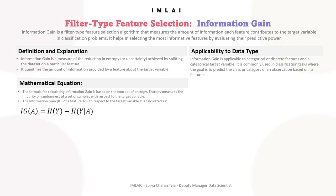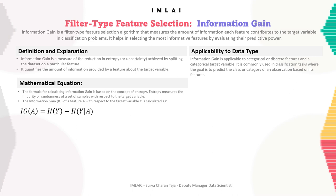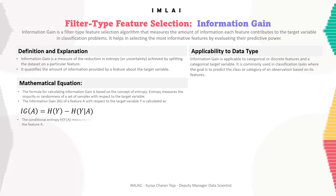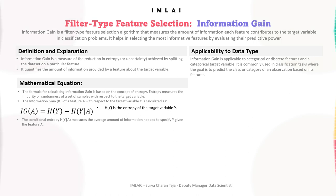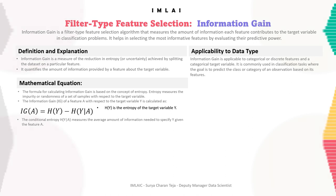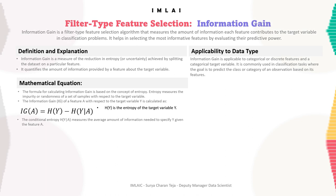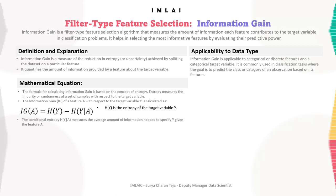The information gain IG(A) is calculated as: IG(A) = H(Y) − H(Y|A), where H(Y) is the entropy of the target variable Y, and H(Y|A) is the conditional entropy of Y given feature A.